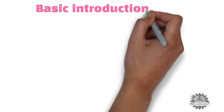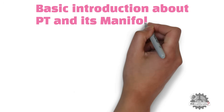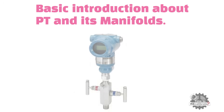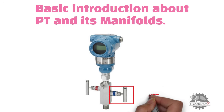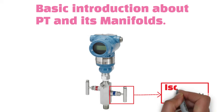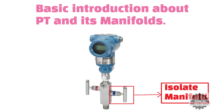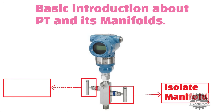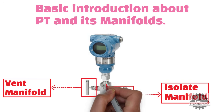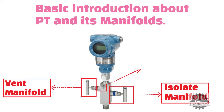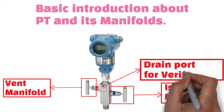Basic introduction about pressure transmitter and its manifolds. All pressure transmitters have two manifolds and one drain port for verification or calibration. The bottom manifold is the isolate manifold, and it remains open in normal operation. The top manifold is the vent manifold and it remains closed during normal operation. The middle port is the drain port and this port is used during verification.